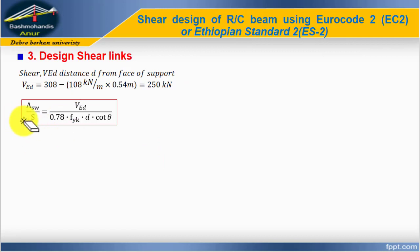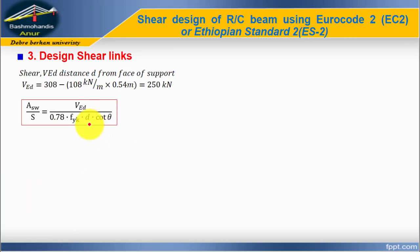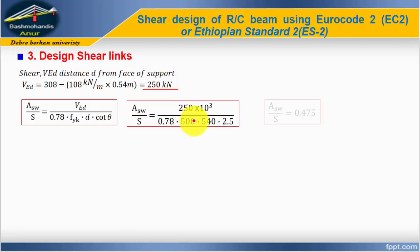Next, calculate Asw/s, which is the ratio of the area of the links to their spacing. This ratio equals the design shear divided by 0.78 × fyk × d × cot theta. We have already calculated VEd = 250 kN. Substituting the values, this ratio equals 0.475 mm²/mm.